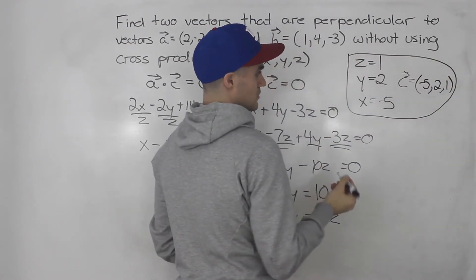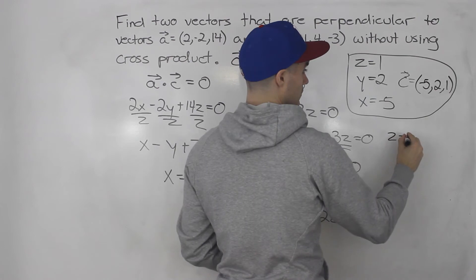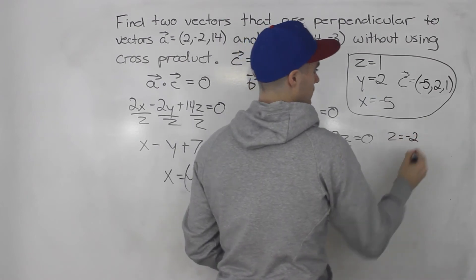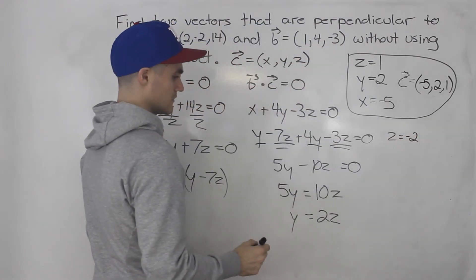We need two vectors. So let's plug in Z equals, let's say negative 2. What happens if Z is negative 2?